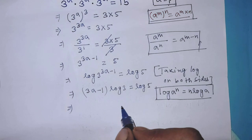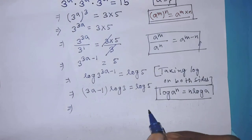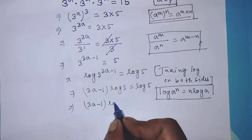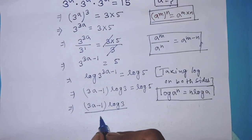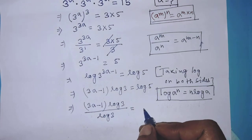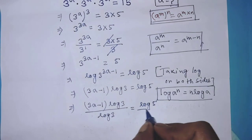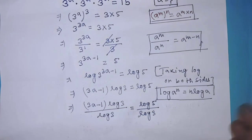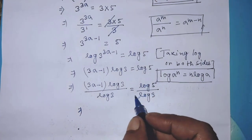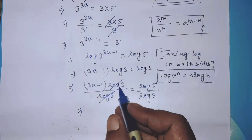Now we divide both sides of this equation by log 3. We can write: 3a minus 1 times log of 3 over log of 3 is equal to log of 5 over log of 3. On the left hand side we can cancel log of 3 from numerator and denominator.